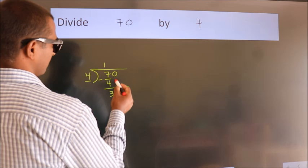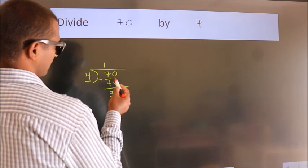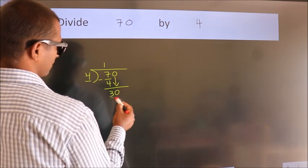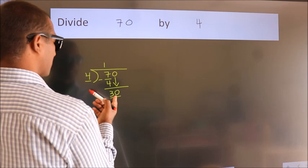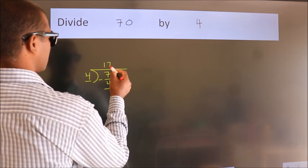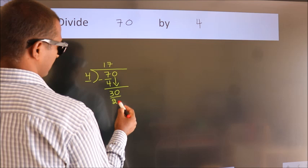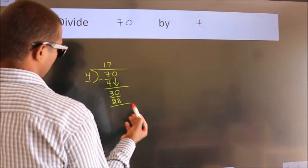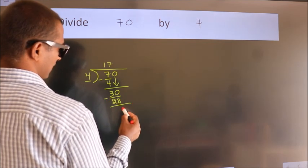After this, bring down the beside number. So, 0 down. So, 30. A number close to 30 in 4 table is 4 sevenths 28. Now, we subtract. We get 2.